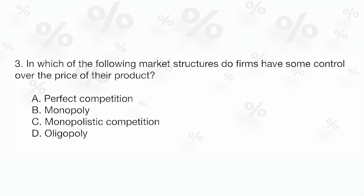Question three. In which of the following market structures do firms have some control over the price of their product? A, perfect competition; B, monopoly; C, monopolistic competition; or D, oligopoly?